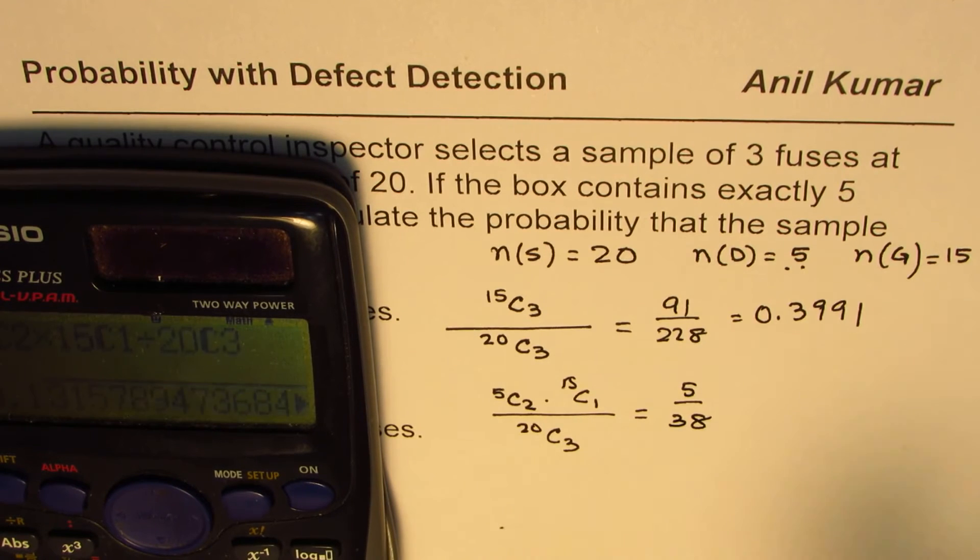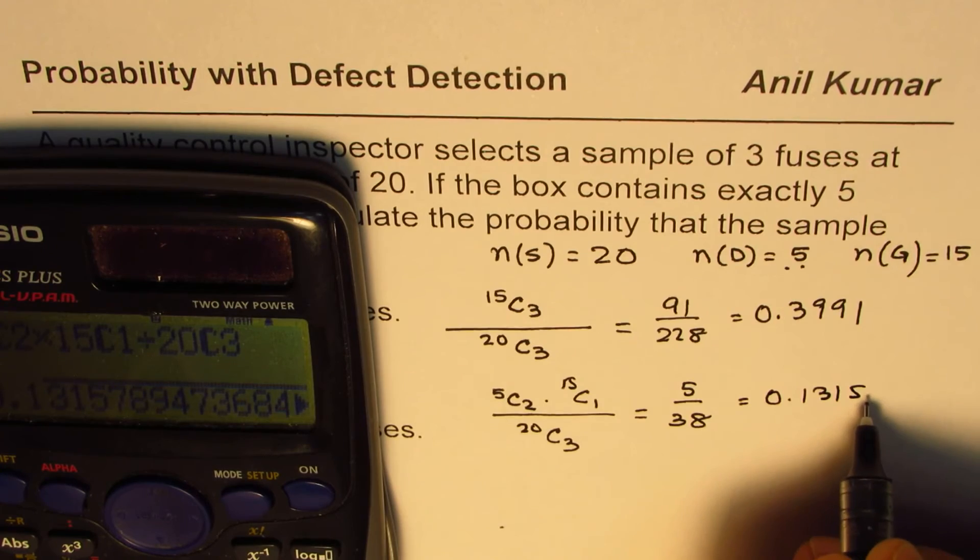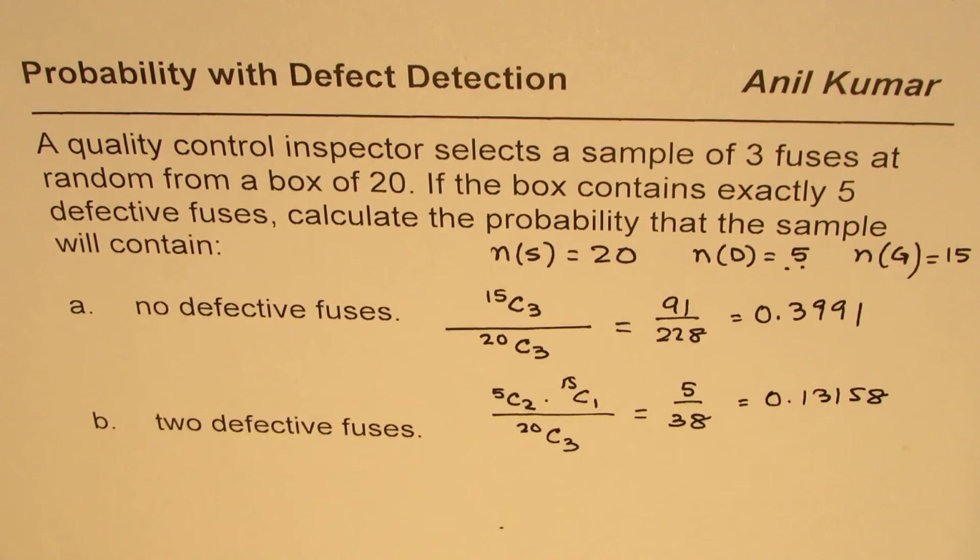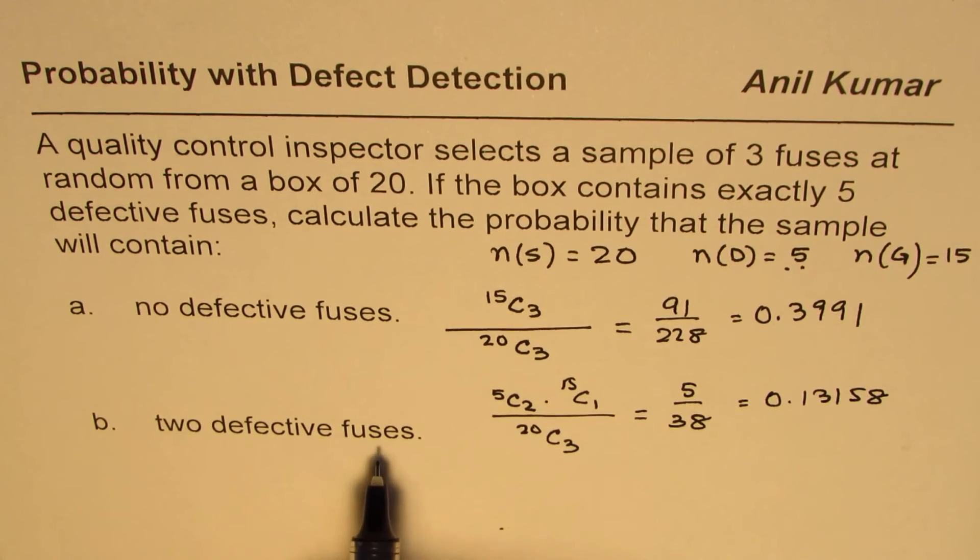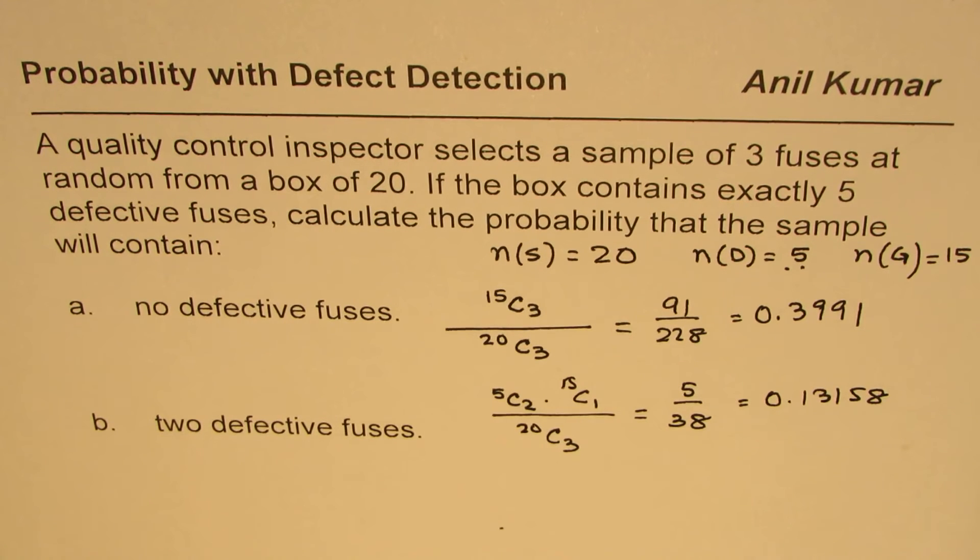And that gives you 5 over 38. And in decimals, it could be written as equal to 0.1315. You can round it to 8. So that is the probability of choosing two defective fuses when you select three of getting two defective pieces.